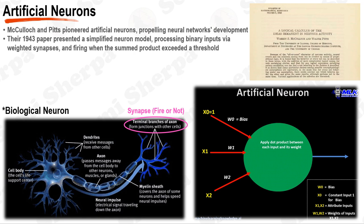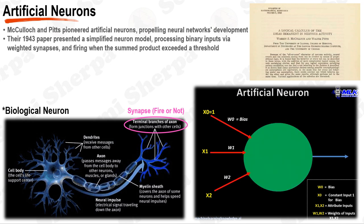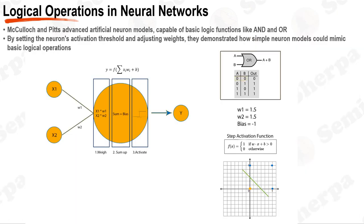Warren McCulloch and Walter Pitts' work on artificial neurons was groundbreaking, as it laid the foundation for the development of neural networks. Their 1943 paper, titled 'A Logical Calculus of the Ideas Imminent in Nervous Activity,' presented a simplified mathematical model of a biological neuron that could perform basic logical functions. In their model, neurons received binary inputs — either 0 or 1 — from other neurons via weighted connections called synapses. The neuron would then process the inputs by summing the products of the inputs and their corresponding weights. If the total sum exceeded a certain threshold, the neuron would fire, producing an output of 1; otherwise, the output would be 0. McCulloch and Pitts pioneered a model for artificial neurons, asserting that it could perform basic logic functions like AND and OR, fundamental to digital computing.